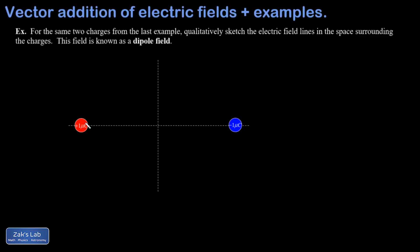In other words, when I'm right next to the plus charge, it just looks like the field of an isolated plus charge. Same for the minus charge. So here's what that looks like.